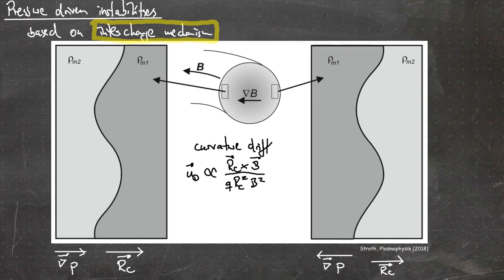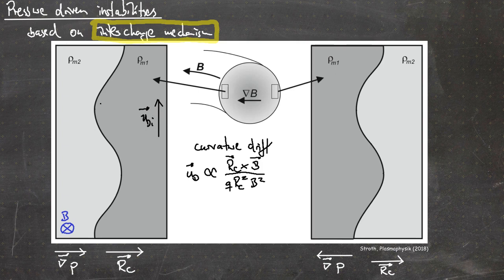On the high field side, the magnetic field points into the board. With the magnetic field pointing into the board and the curvature radius pointing to the right, the curvature drift for the ions is pointing upwards. The slightly darker colored area indicates regions of higher pressure and thus higher plasma density, as opposed to the lighter gray colored area, with the pressure gradient pointing to the right.